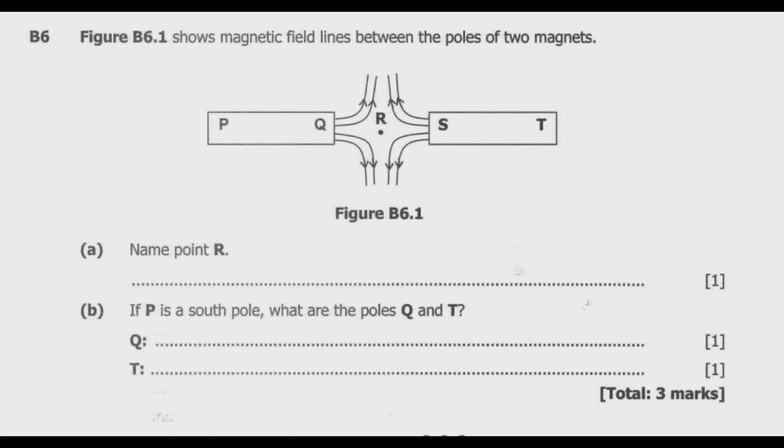Question A: name point R. What is point R? Point R, which is here, is known as neutral point. This is the point where there is no resultant magnetic field because the two fields from the north poles of two magnets are equal in magnitude but opposite in direction.